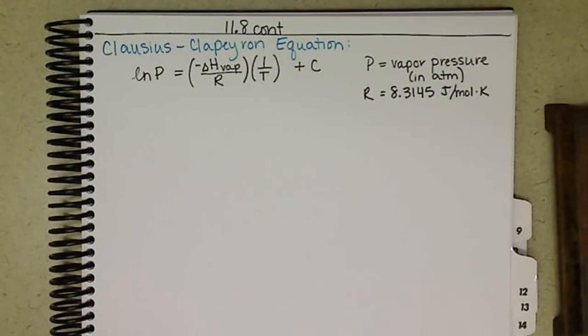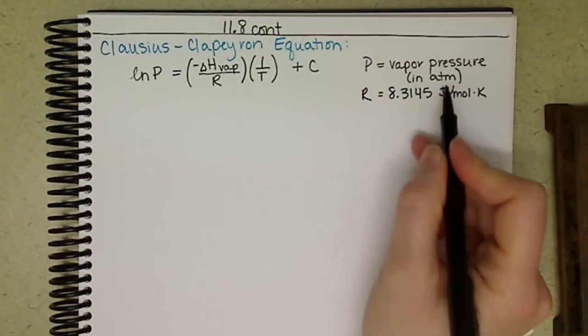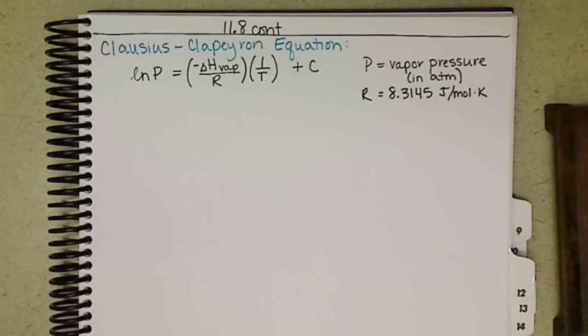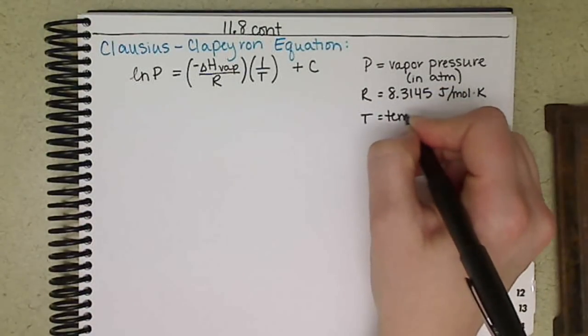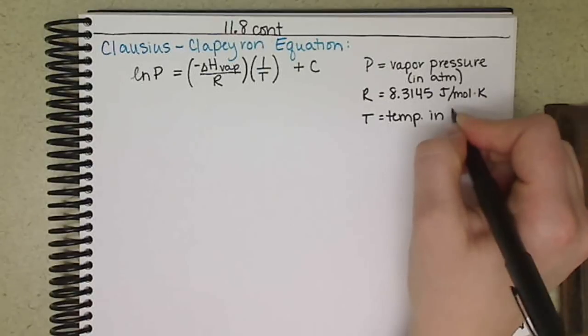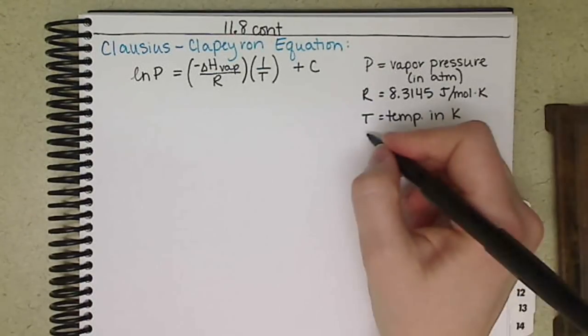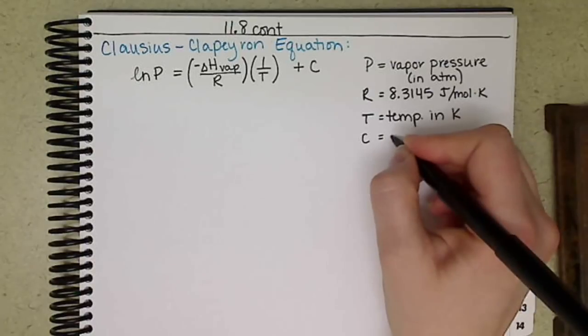And we don't want the PV=nRT version of 0.0821 liter atmospheres per mole Kelvin. We want the energy one, one with joules in there. We want the temperature in Kelvin, and C is just some constant.